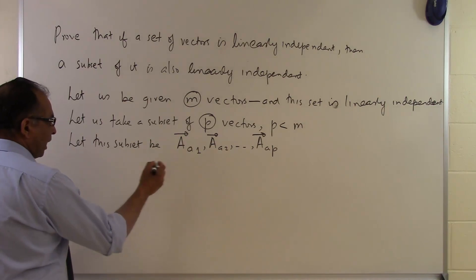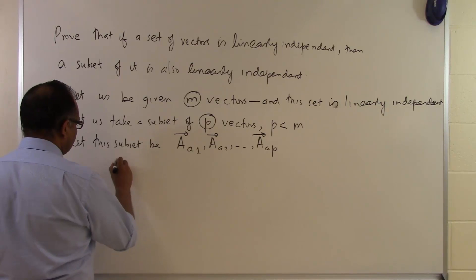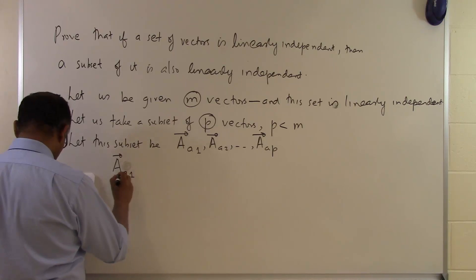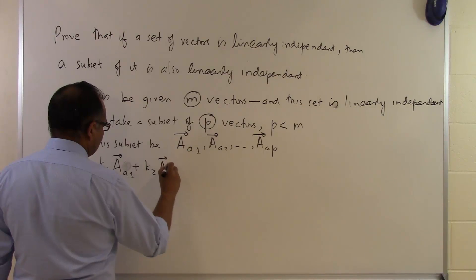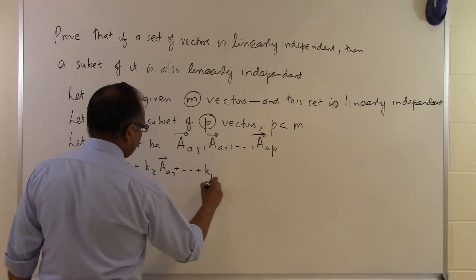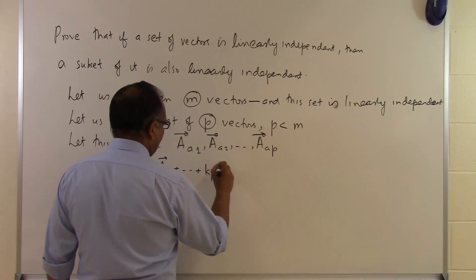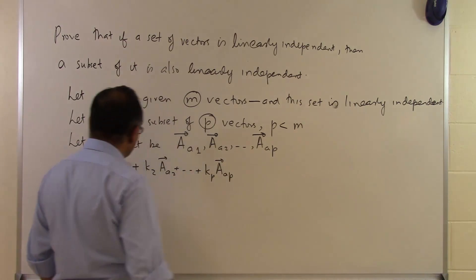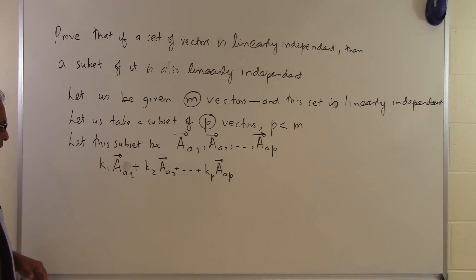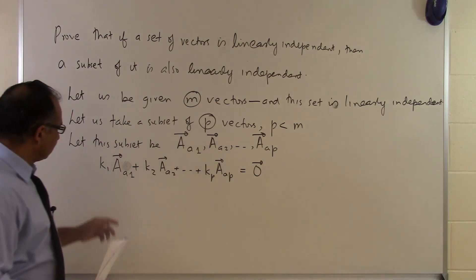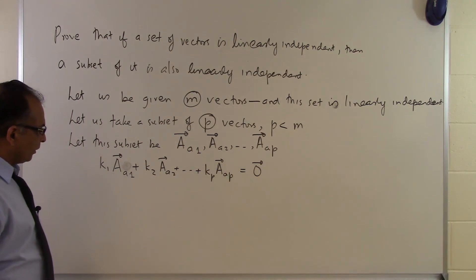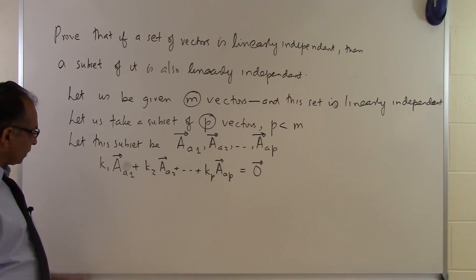A linear combination of these p vectors will be k1·a1 + k2·a2 + ... + kp·ap. If we set this equal to the zero vector, what we need to show is that k1 = k2 = ... = kp = 0 is the only solution possible for this linear combination to equal the zero vector.